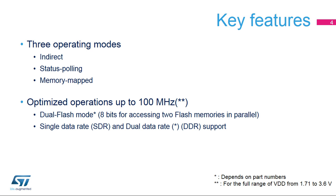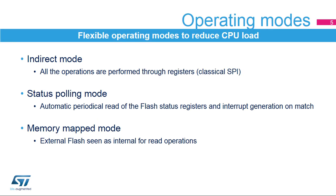The Quad SPI Memory Interface offers three operating modes. It is optimized for communication with external memories with support for dual flash mode, allowing access to 8-bits in a single reading cycle. It also supports both single and dual data rate operation.